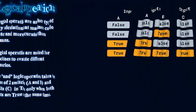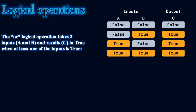The OR logical operation takes two inputs A and B and the result C is true when at least one of the inputs is true. If A is false and B is false, the result is false. If A is false and B is true, it returns true. If A is true and B is false, it also returns true. If both A and B are true, it returns true. In OR, if one input is true it generates a true output; only when both are false does it generate false.